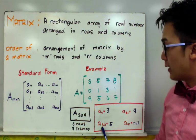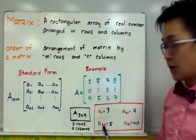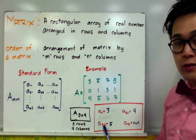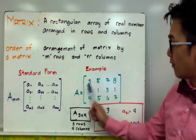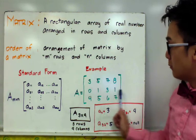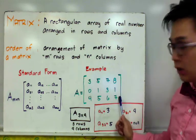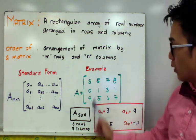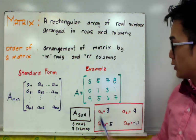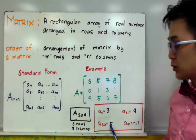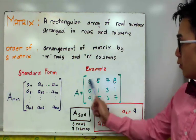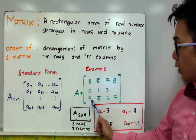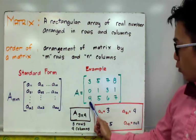To find entry A sub 3 2, we go to the 3rd column and 2nd row, which gives us 5. So A sub 3 2 is equal to 5. Similarly, A sub 3 1 — the 3rd row, 1st column — is equal to 4.